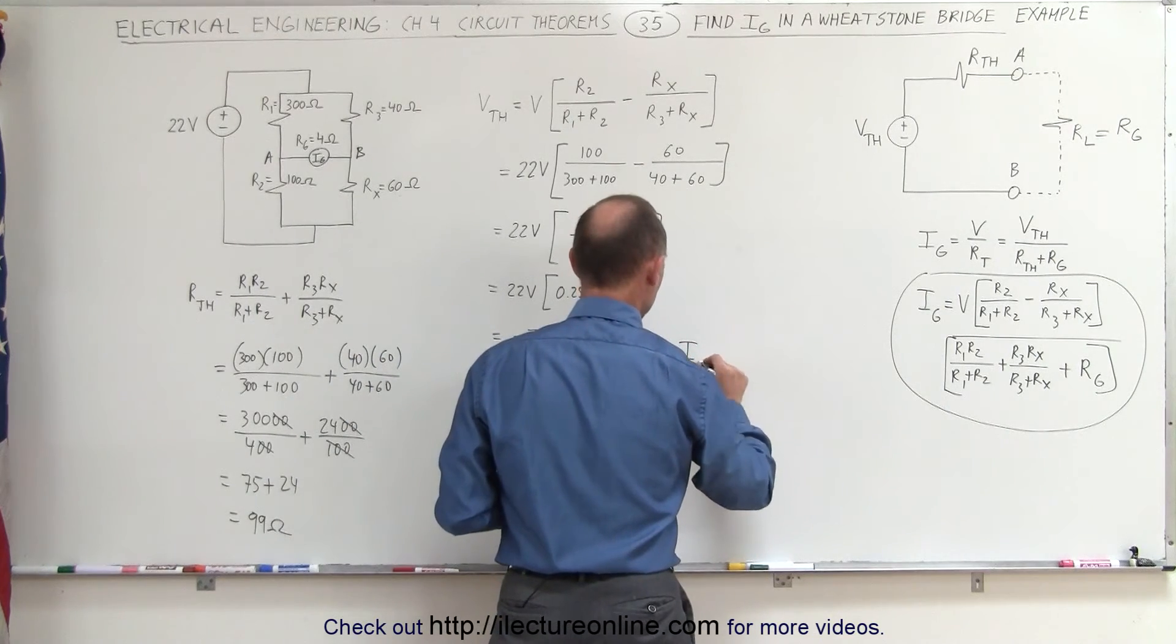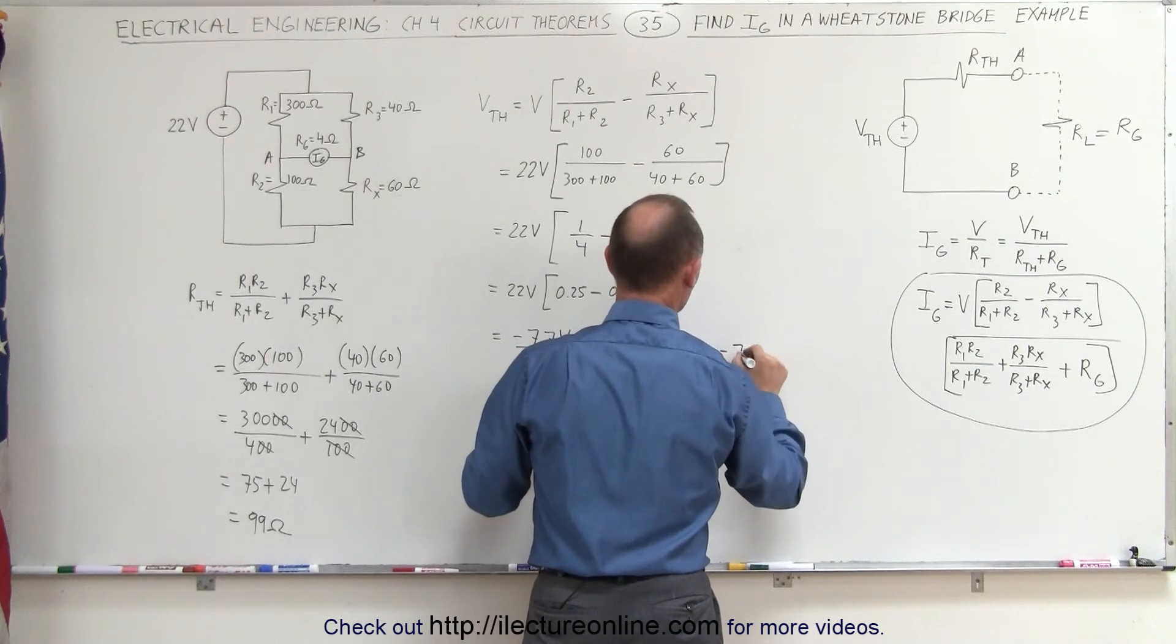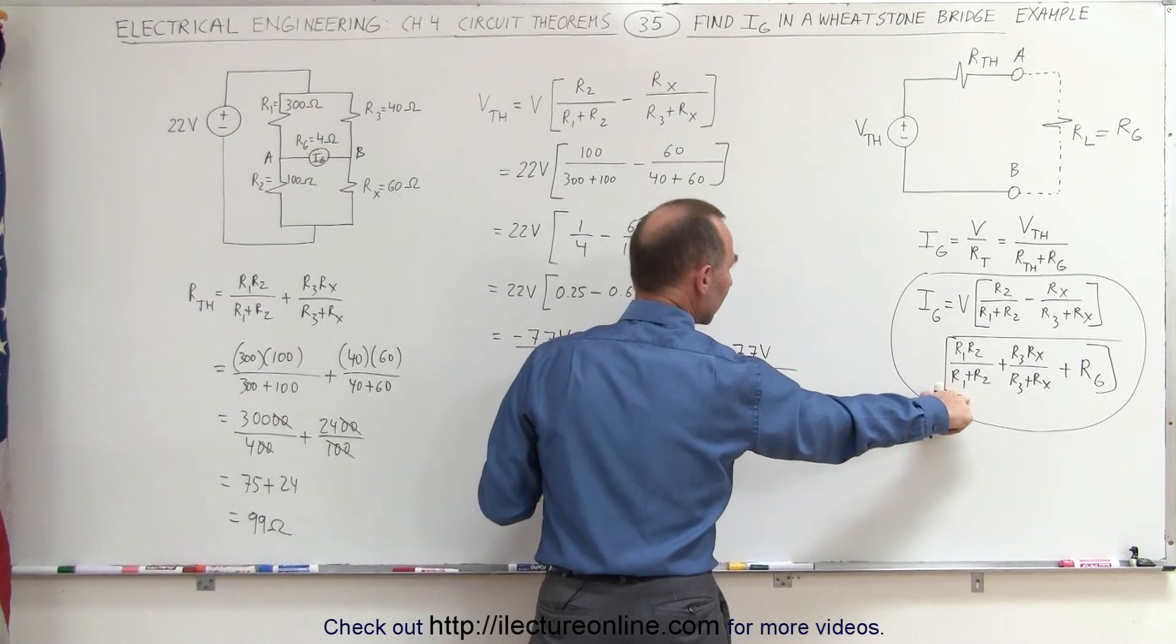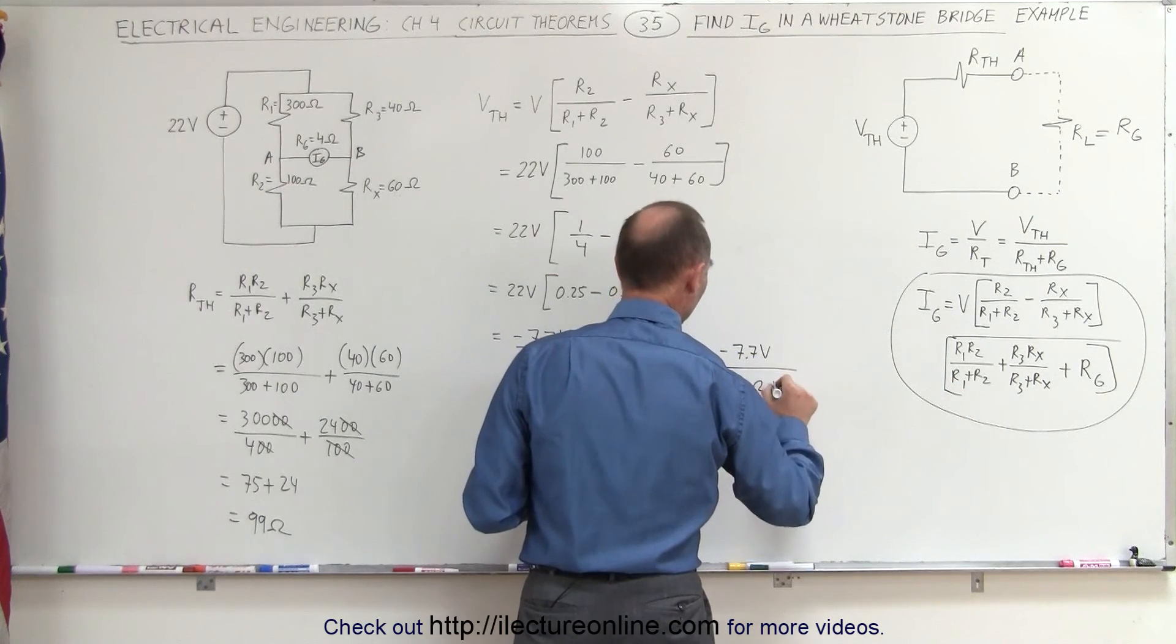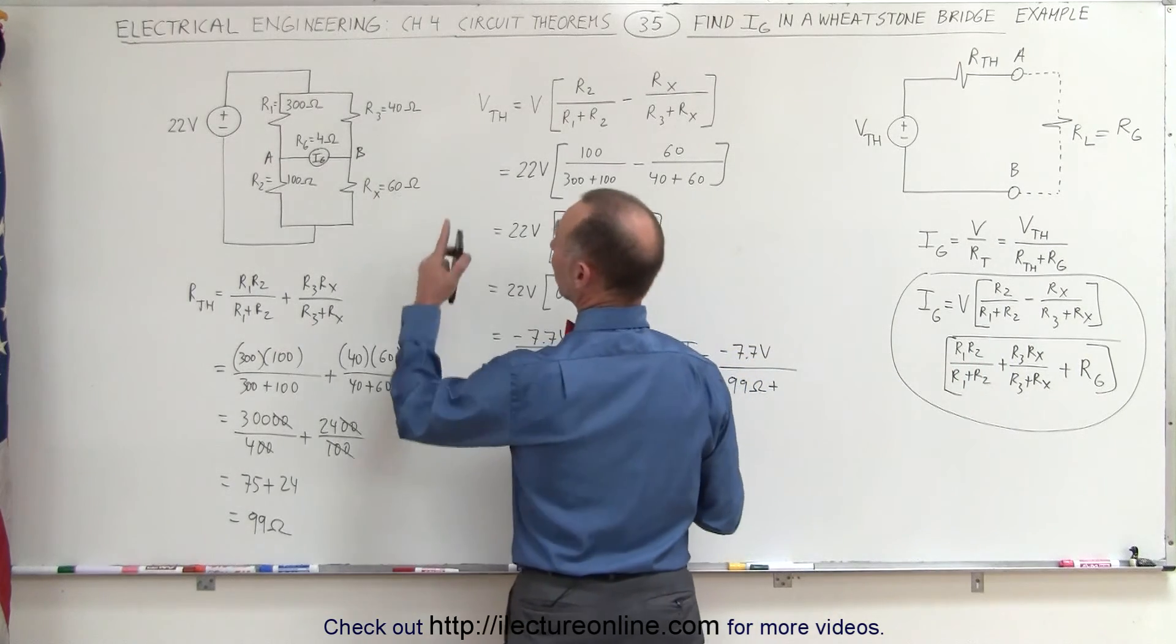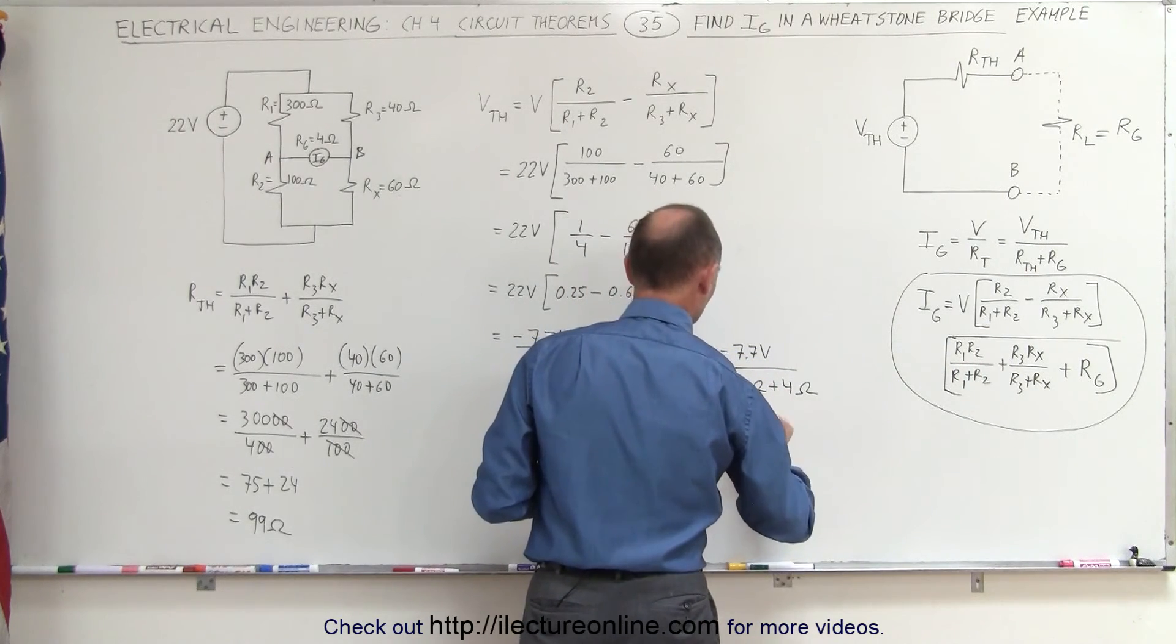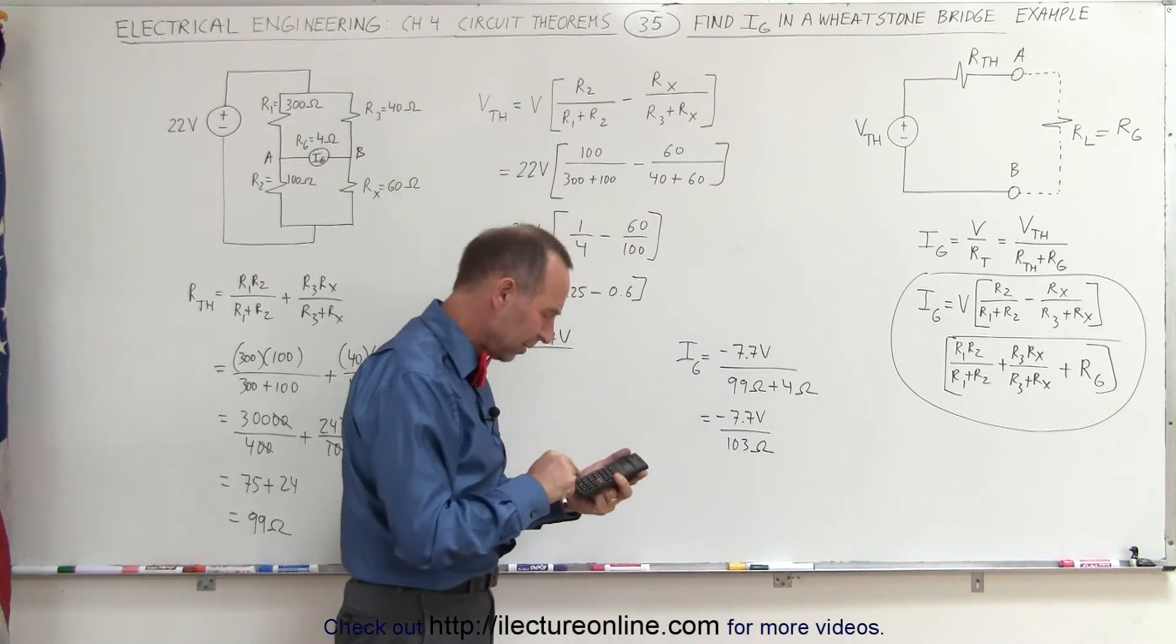I sub G is equal to the Thevenin voltage, which is a minus 7.7 volts divided by the Thevenin resistance, which is 99 ohms, plus the resistance of the galvanometer, which was 4 ohms, which is equal to minus 7.7 volts divided by 103 ohms. So divide that by 103,